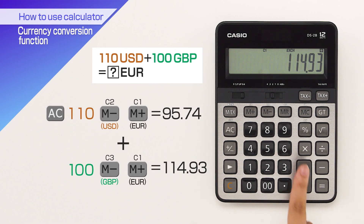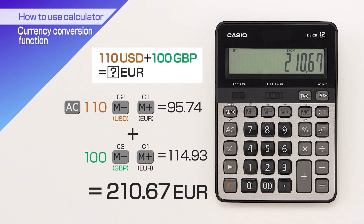Finally, press equals, which will give you the sum of the US dollars and GBP amounts in euros.